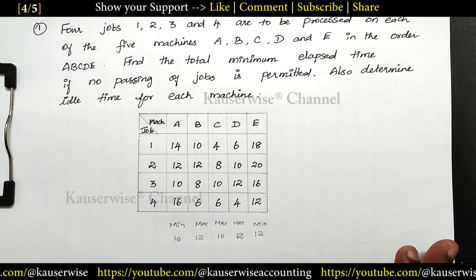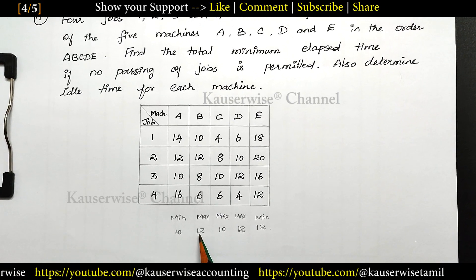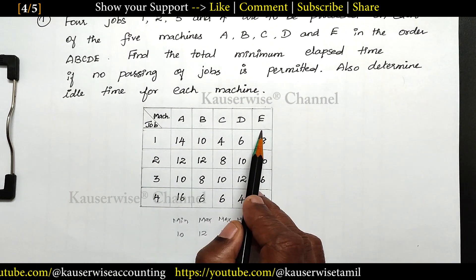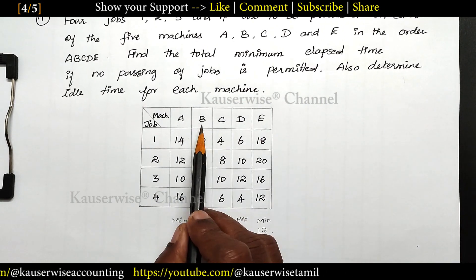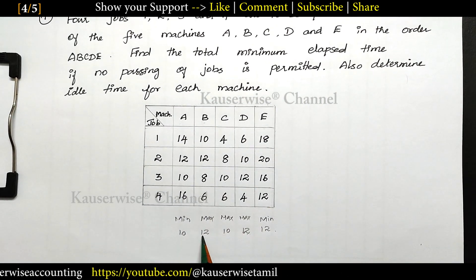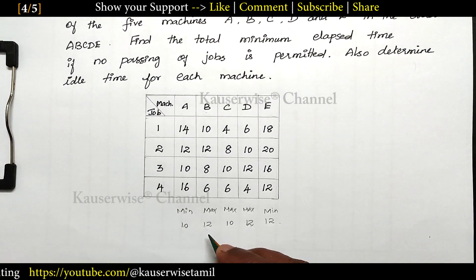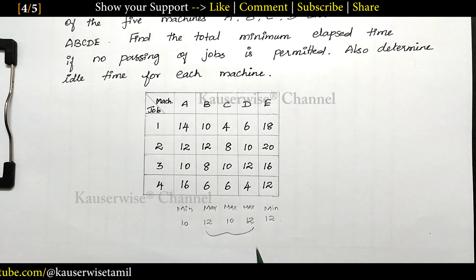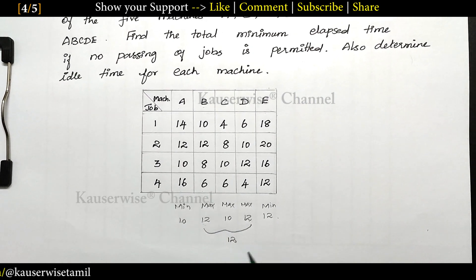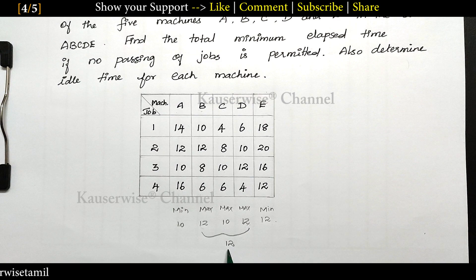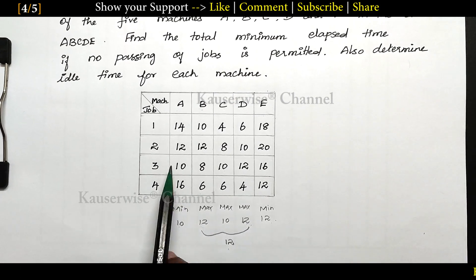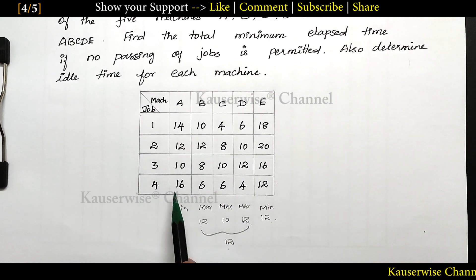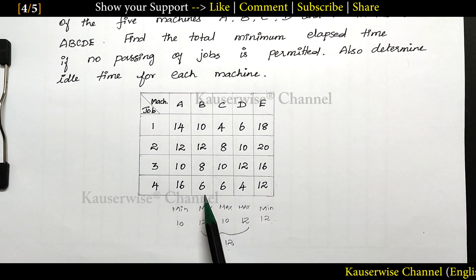After finding the minimum duration of the first machine and last machine, now we need to find out the maximum duration on the machines in between — that is B, C, D. We need to find out the maximum duration on each machine. For B, maximum duration is 12. For C, maximum duration is 10. And for D, maximum duration is 12. Now the next step is we need to find the maximum of maximum duration between A and E, which is 12.